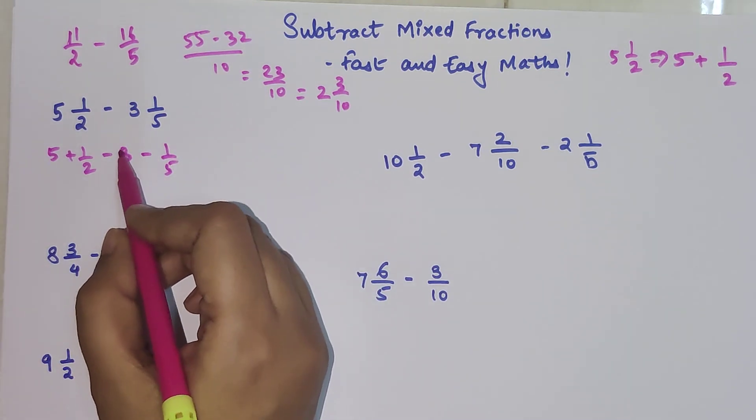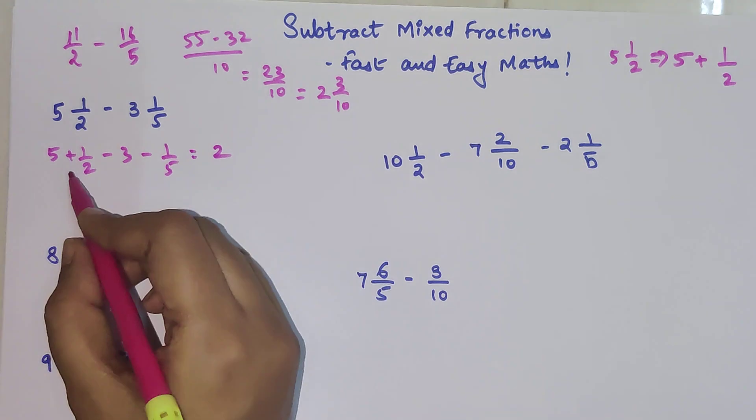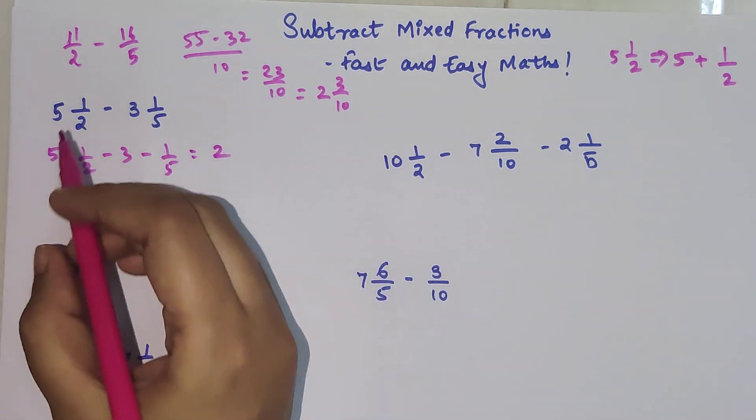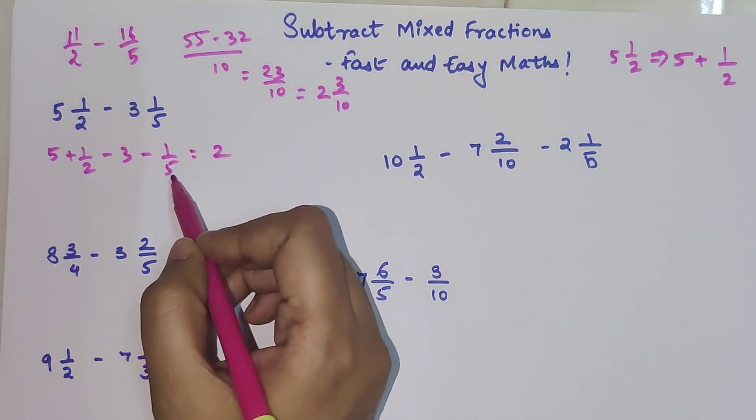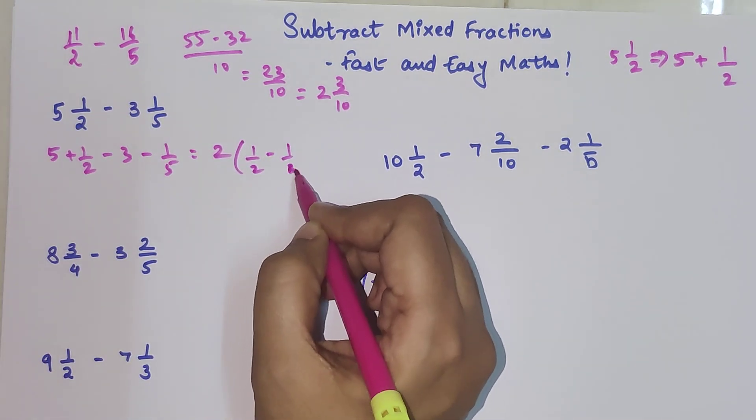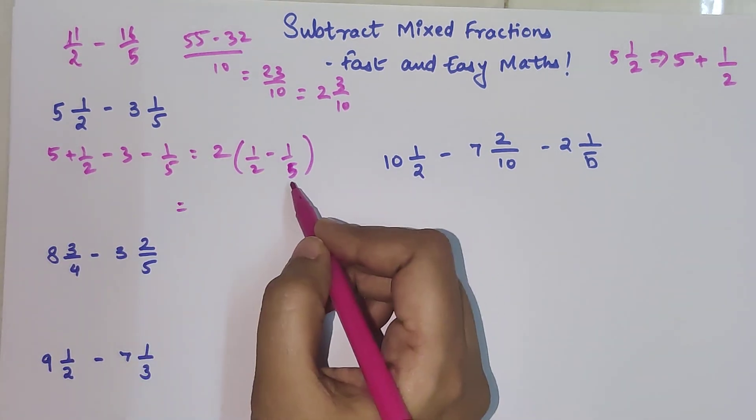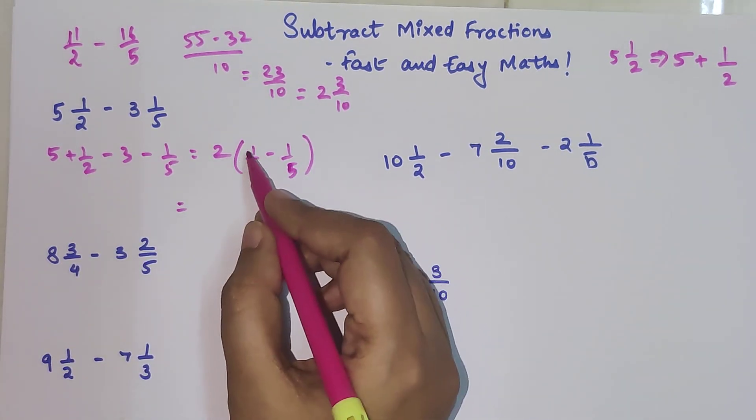This was actually 3 plus 1/5, but the minus will be taken inside. Then what you do is just subtract the two integers, which is 5 minus 3 is 2, and then simply 1/2 and 1/5 you have to subtract. This is going to be very easy because both are primes in the denominator.